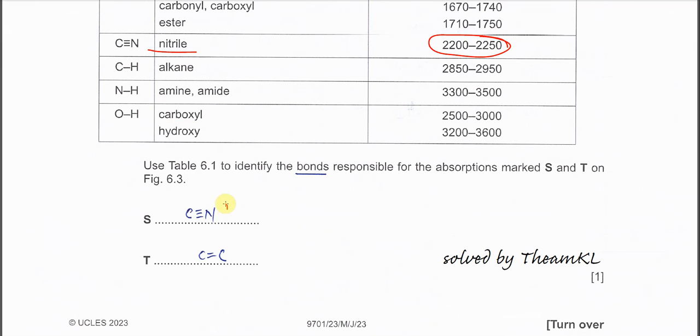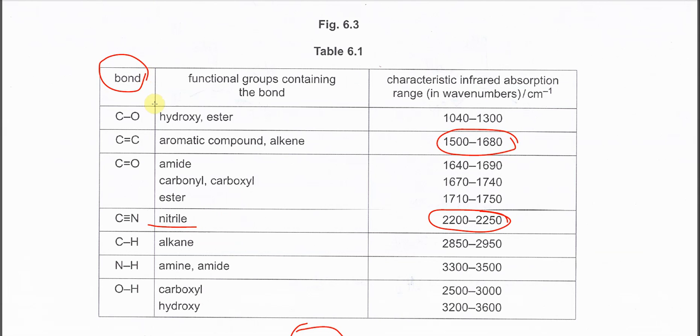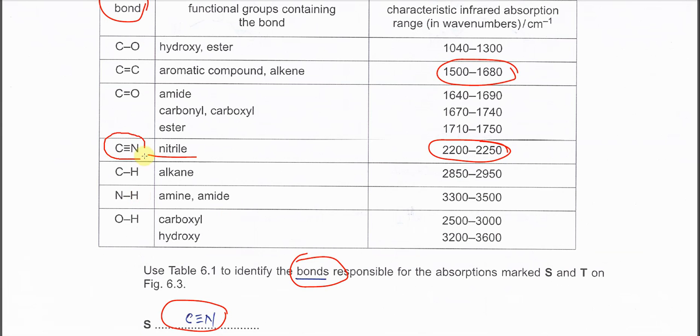You must understand what they want. They say identify the bonds, so you need to give the bonds that are involved: C≡N triple bond and C=C double bond.